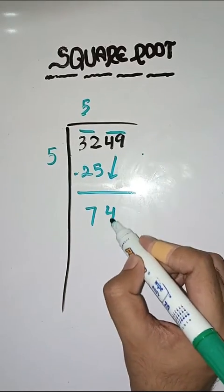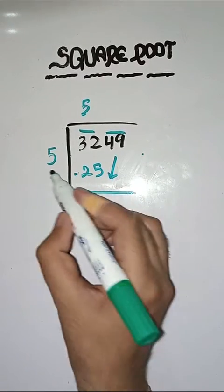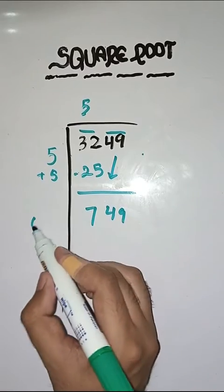Next pair is 49. We take this down. Here we will do 5 plus 5 which is equal to 10.